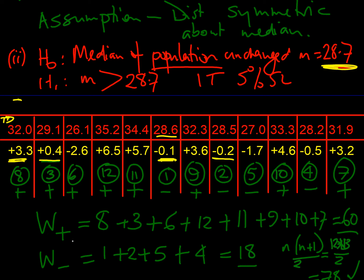We sum all positive rankings: 8, 3, 6, 12, 11, 9, 10, 7 — totalling 60. We sum all negative rankings: 1, 2, 5, 4 — totalling 18. As a check, the sum 1 to n should equal n(n+1)/2 = 12×13/2 = 78. Indeed 60 + 18 = 78, confirming the calculations are correct.